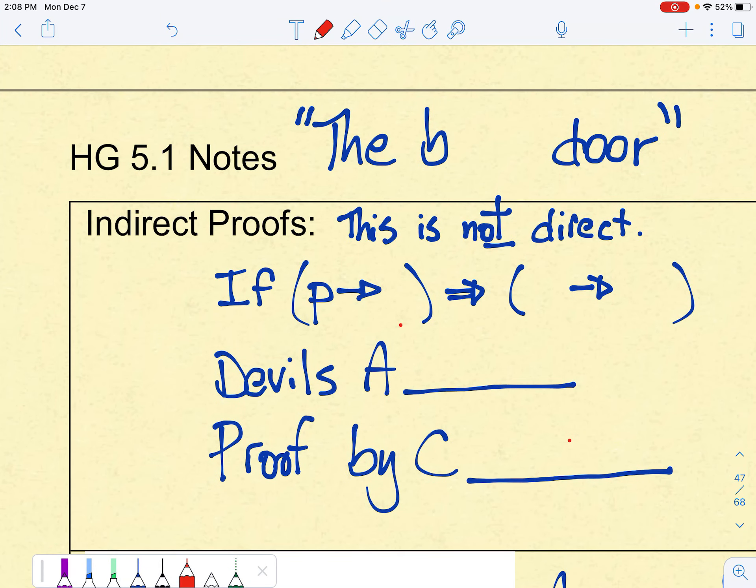Okay, today's lesson is the back door, 5-1. These are not direct proofs, but rather indirect.